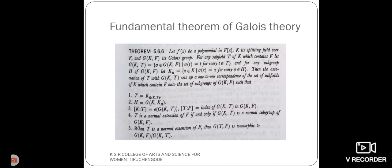And for any subgroup H of G(K,F), let K(H) equal the set of elements x belongs to K such that sigma of x equals x for every sigma belongs to H.